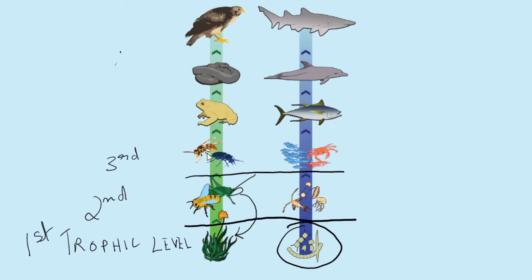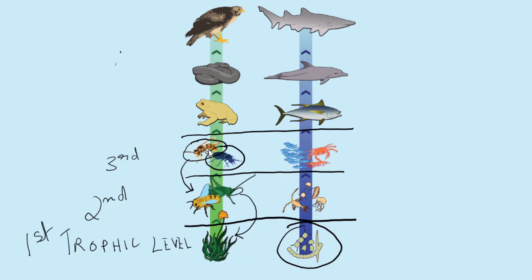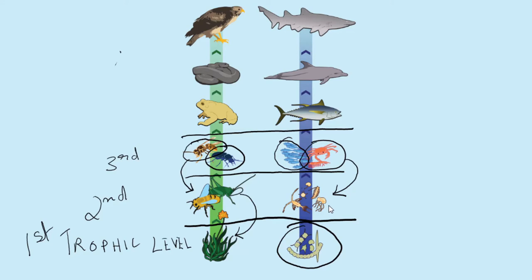At the third trophic level in the grassland ecosystem, we have carnivorous insects such as a hornet that preys upon honey bees, and a tiger beetle that preys upon all types of insects — these are secondary consumers. In the marine ecosystem, small fish and crustaceans like crabs occupy the third trophic level as secondary consumers, dependent upon zooplankton, which in turn are dependent upon phytoplankton.